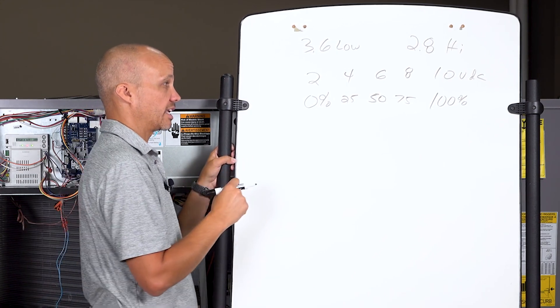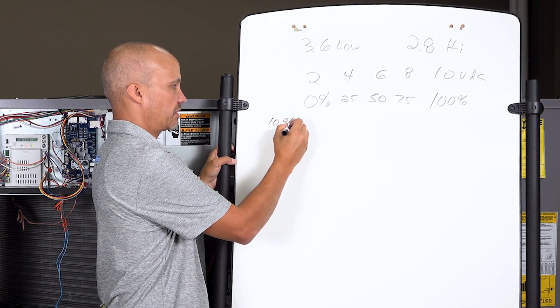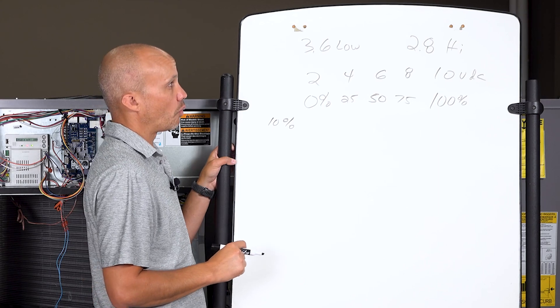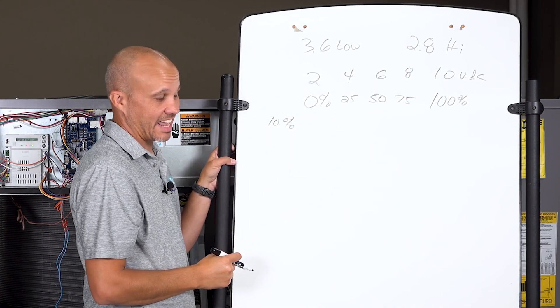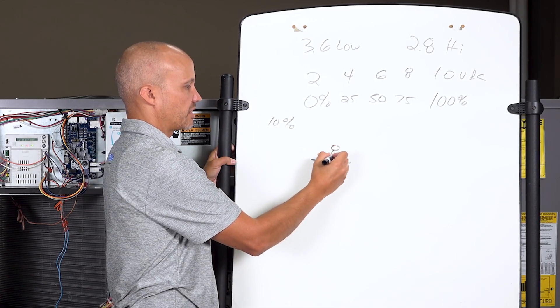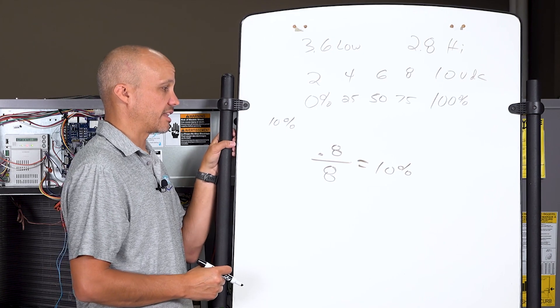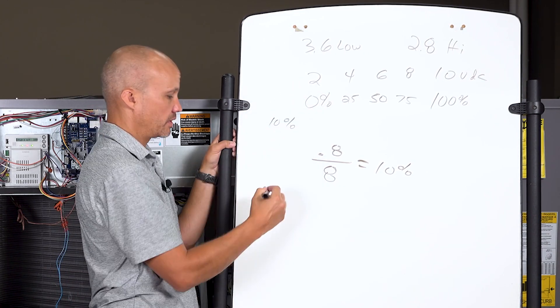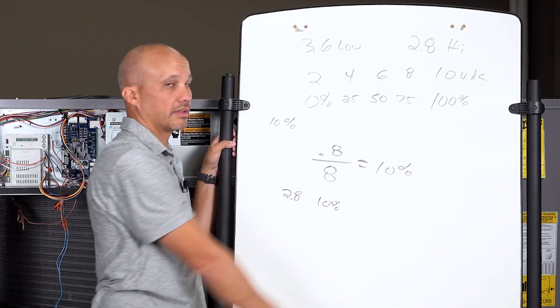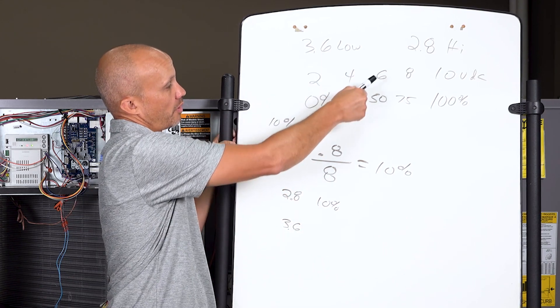Let's say the minimum position, I want this thing to be 10 percent. What voltage do I set that for? 2 volts would be closed, 4 volts would be 25, so it's somewhere in between. From 2 to 10 volts, that's an 8 volt span. 10 percent of 8 is 0.8. I want to set that thing for 0.8 above the minimum, so 2.8 volts. That's 10 percent. Our default high fan speed was 10 percent. 3.6 volts is another 0.8 above that, so that's 20 percent.